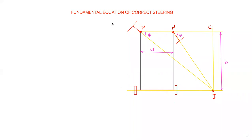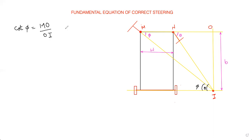Now looking at the configuration, you can see that the angle for the inner wheel is phi and the total angle for the outer wheel is theta. When taking a right turn, theta is greater than phi, meaning the inner wheel has more inclination than the outer wheel. Now let us proceed with the derivation. Cot phi equals adjacent over opposite, which is MO divided by OI. Cot theta equals NO divided by OI.